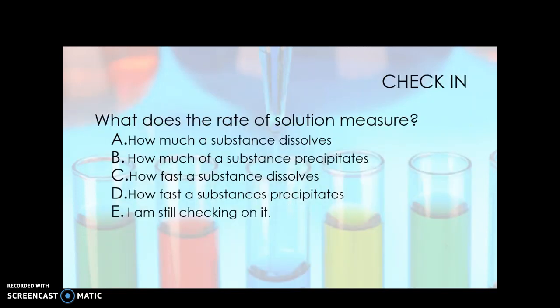Alright. So let's do some check-ins. What does the rate of a solution measure? A, how much a substance dissolves. B, how much a substance precipitates. C, how fast a substance dissolves. D, how fast a substance precipitates. And E, I'm still checking on it. What do you think? The key word here. What do you think it is? I would say it's a rate. What's a rate? Rate refers to time. How fast or how slow something is. So what is your best answer? Did you pick C? I hope so.